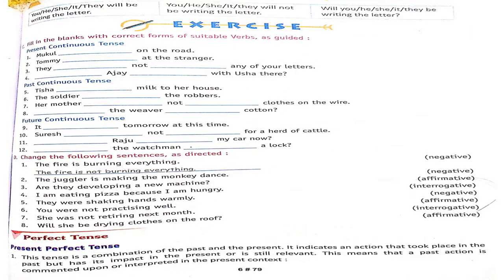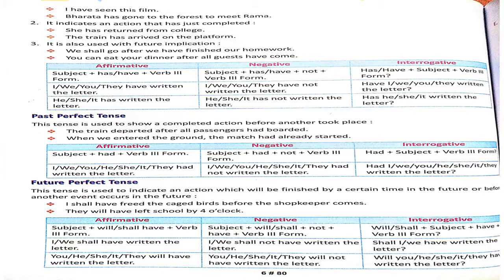Now the C question: fill in the blanks with the correct forms of the verb. 'Mukul dash on the road' — in present continuous: 'Mukul is running.' 'Tisha was drinking milk.' And for the ninth sentence: 'It will be raining tomorrow' — meaning it will be raining at that time tomorrow. I have also explained the next ones.